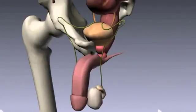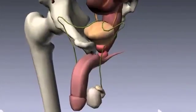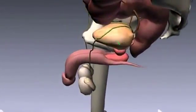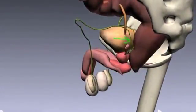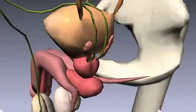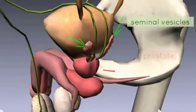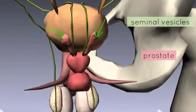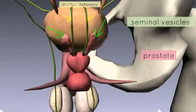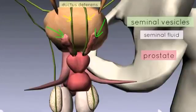The ductus deferens passes up and over the bladder, and then passes posteriorly and medially behind it. Zooming in, you can see two other structures: the seminal vesicles and the prostate gland. The seminal vesicles lie either side of the ductus deferens.